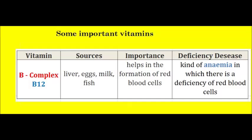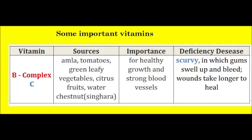Vitamin C. Sources of Vitamin C are amla, tomatoes, green leafy vegetables, citrus fruits, water chestnut (which is singhara). The importance of Vitamin C is for healthy growth and strong blood vessels. Deficiency disease due to lack of Vitamin C is scurvy, in which gums swell up and bleed, and wounds take longer to heal.